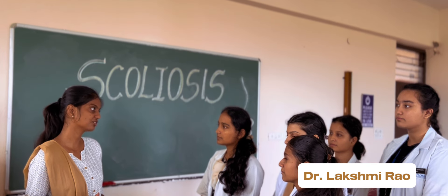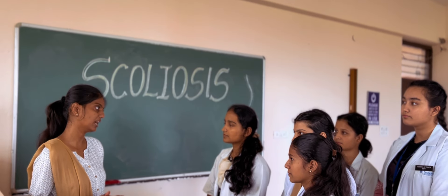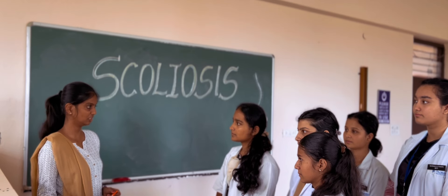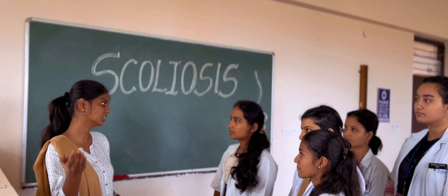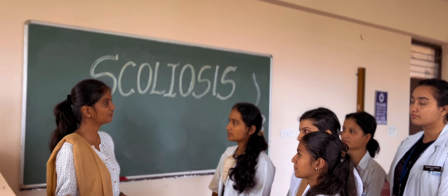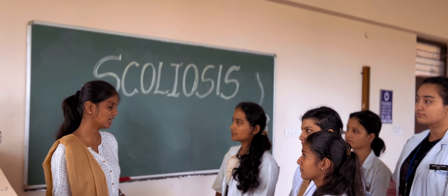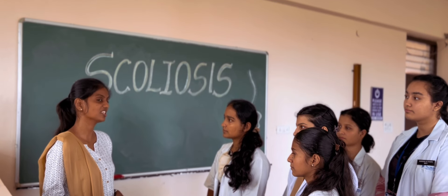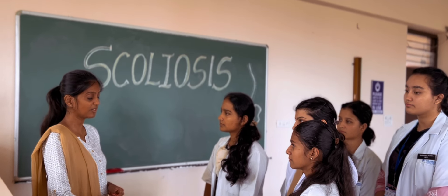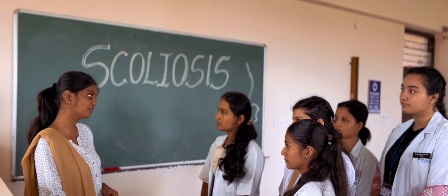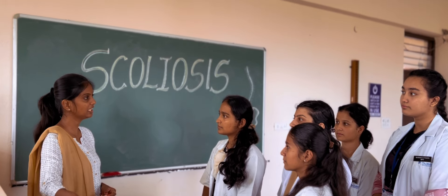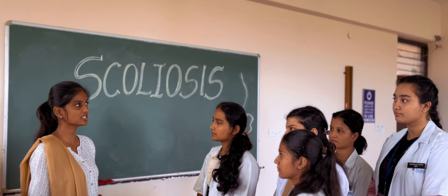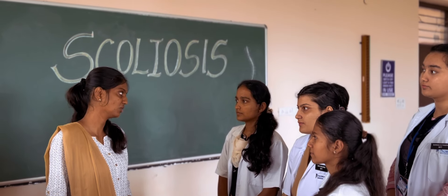There are three basic categorizations of scoliosis: idiopathic, congenital, and neuromuscular. Idiopathic accounts for around 80 to 85% of all scoliosis cases. Pediatric idiopathic scoliosis is further defined as infantile (up to 3 years of age), juvenile (4 to 8 years), and adolescent (9 to 18 years), classified based on the onset of age.